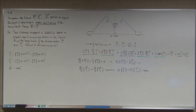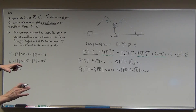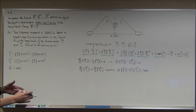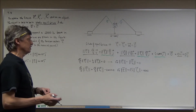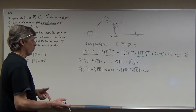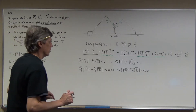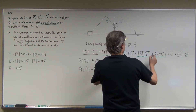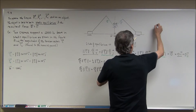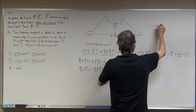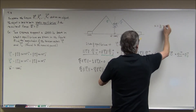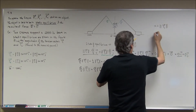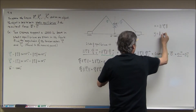Now that looks a little confusing — it just looks messy. You're used to solving systems with x's and y's. So here's what I'm going to do: I am going to let x represent the magnitude of vector T sub 1, and I'm going to let y represent the magnitude of vector T sub 2.